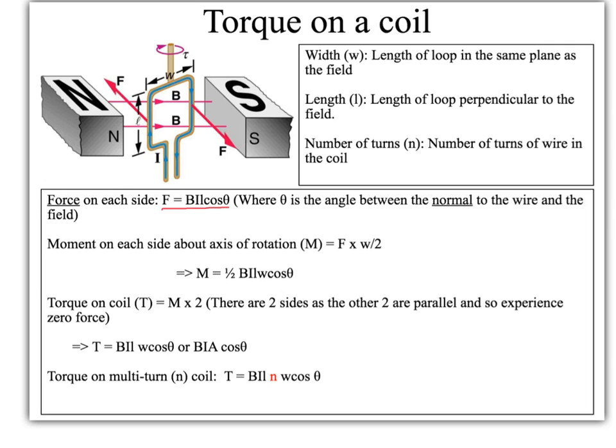So we want to work out what torque is. First we need to know what the moment of one of the forces is, and then obviously there are going to be two forces both trying to turn it in the same direction. Moment is force times the perpendicular distance from the centre of rotation. W is the whole width of the coil but the centre of rotation is only halfway, so you multiply the force by W over 2. That gives you BIL cosθ multiplied by W over 2, which equals half BIL cosθ.